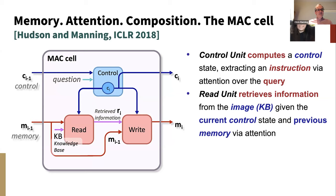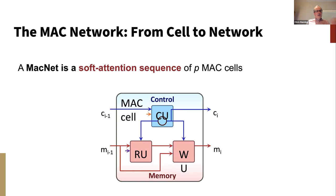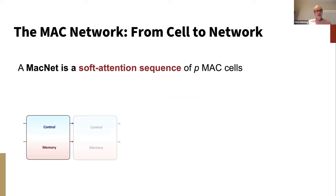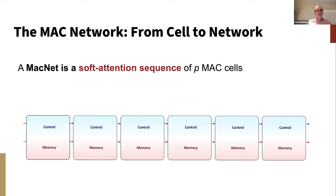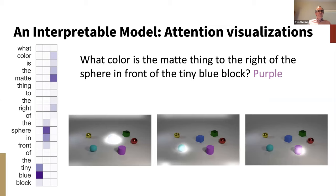The write unit updates the memory state by merging old and new information. MAC was a sequential model — a sequence of MAC cells. When MAC cells computed and wrote a new memory state, they could do attention back to any of the old memory states. Therefore this model had the capacity to represent an arbitrarily complex directed acyclic graph reasoning pattern, such as you might see in symbolic logical reasoning, doing it all by attention. Every part is attention: attention over the sentence, attention over the image, and attention over past memories as it reasons. The result was a very interpretable model where you could look at attention visualizations over both the sentence and the visual scene.